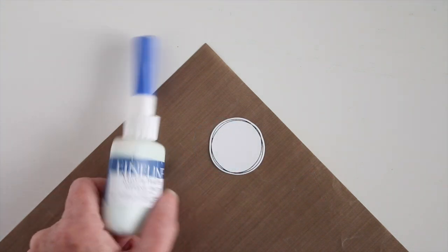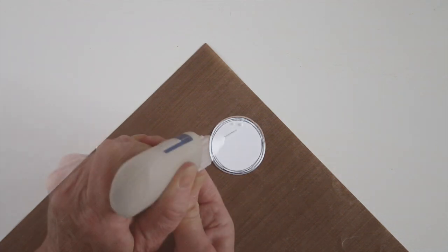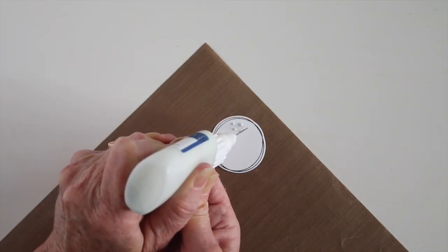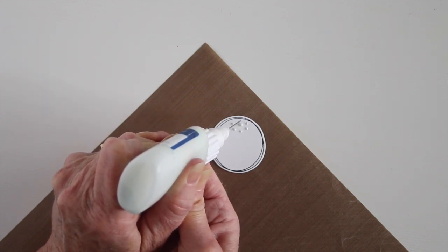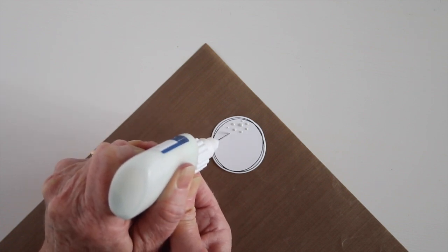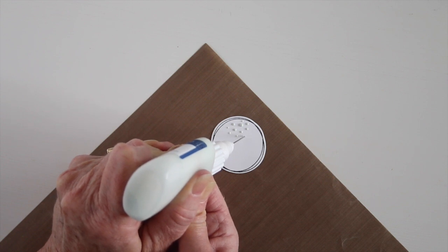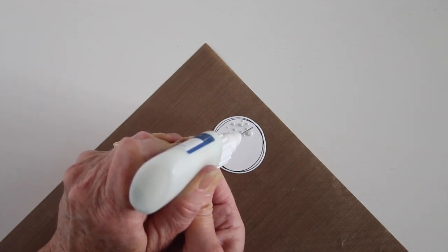Another fun product to use is the liquid mask. And this comes in a bottle with a fine tip applicator. And I'll be just putting dots of the mask onto my paper and creating my own pattern. The liquid mask is really easy to work with. You can add either dots or squiggles or lines and just create whatever pattern that you'd like. I will be letting this dry completely before I add my ink on top.